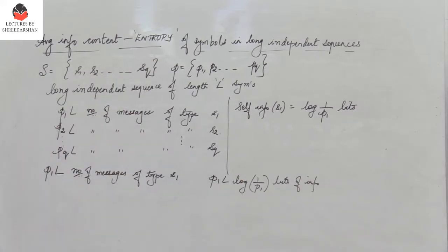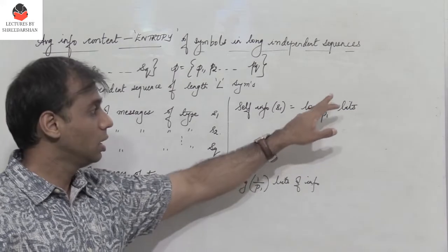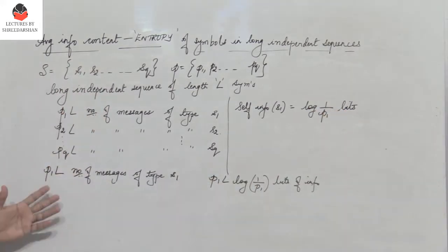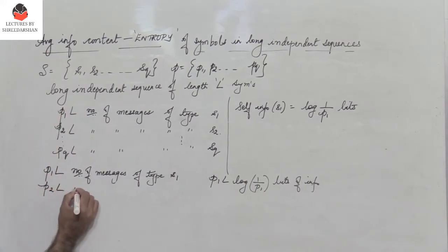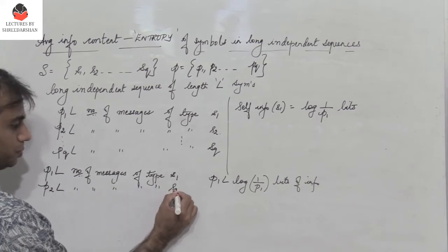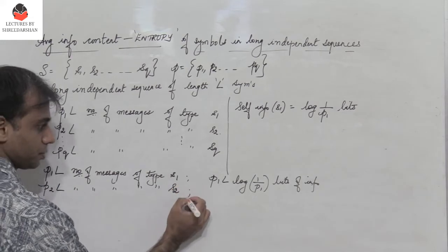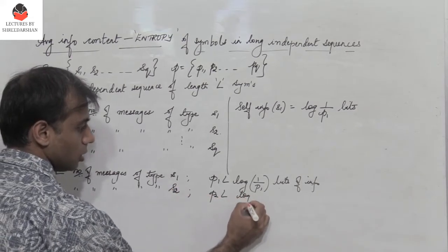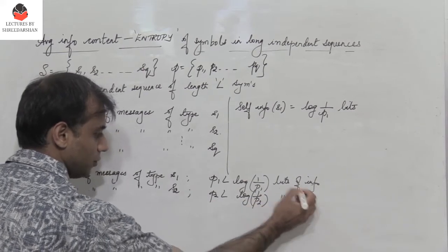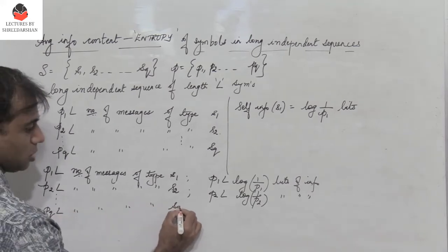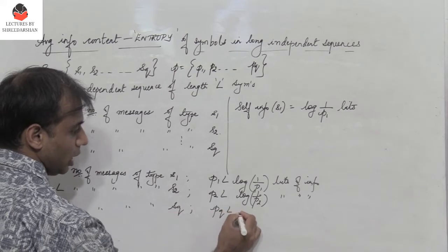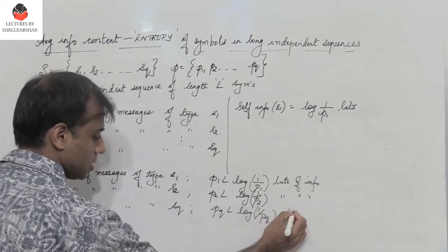The self-information of S1 is log(1/P1) bits. I have P1×L messages of type S1, so I multiply to get P1·L·log(1/P1) bits. Similarly, P2×L messages of type S2 give P2·L·log(1/P2) bits, and PQ×L messages of type SQ give PQ·L·log(1/PQ) bits of information.